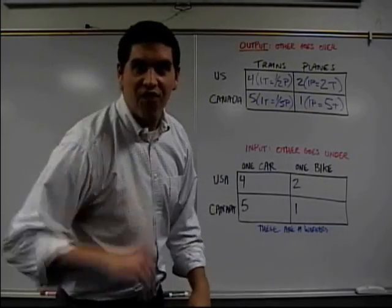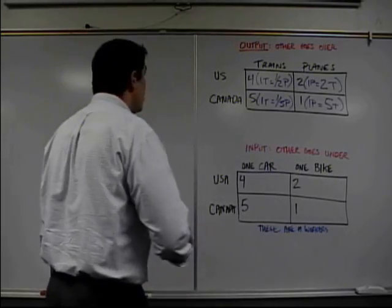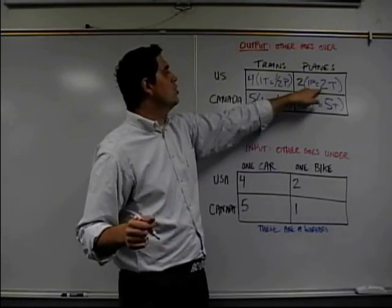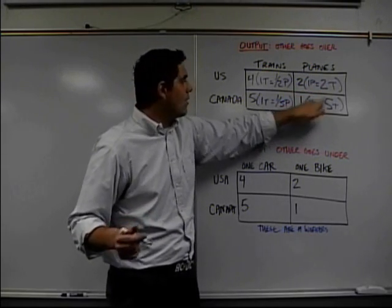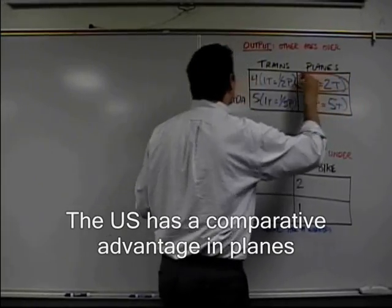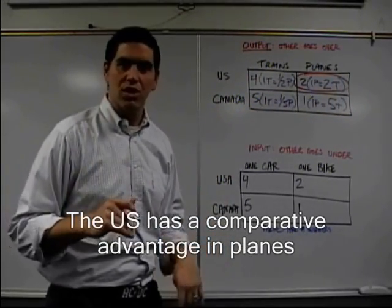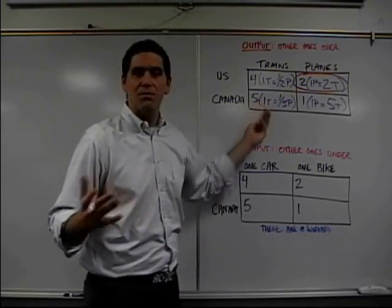And I find out the comparative advantage, the one that has the lower opportunity cost. So in this situation, would you rather have the country that gives up two trains, right? Produce planes or the one that gives up five trains? Yeah. I'd rather have the one that only gives up two. So the United States has a comparative advantage in the production of planes. That's the right answer. That's what your teacher is looking for. Now, I'm telling you right now, mathematically, you're not going to have a comparative advantage in both. You're just not.